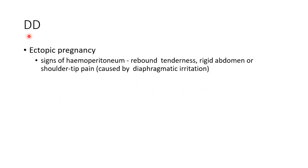Let us see about the differential diagnosis of abortion or miscarriage. Ectopic pregnancy is an important differential diagnosis. In ectopic pregnancy, along with bleeding, pain and features of shock, there will be signs of hemoperitoneum which will not be seen in abortion. These signs include rebound tenderness, rigid abdomen and shoulder tip pain due to diaphragmatic irritation.